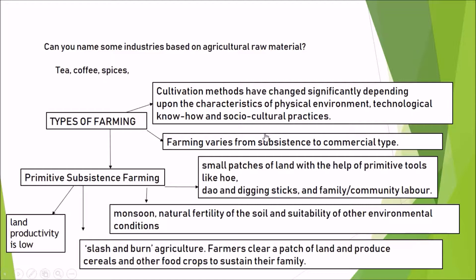Types of Farming. The types of farming refer to cultivation methods that have changed significantly depending on the characteristics of the physical environment, technological knowledge, and socio-cultural practices.